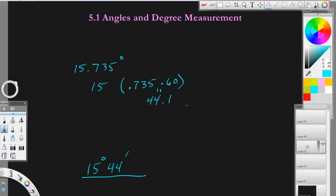If this is our answer blank, we'll have 15 degrees, 44 minutes. Then, we'll take our 0.1, the leftover decimal here, times 60 again. When we take 0.1 times 60, that equals 6, so that is 6 seconds.